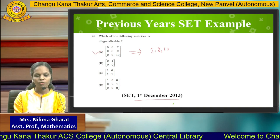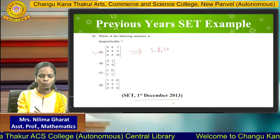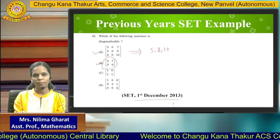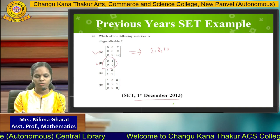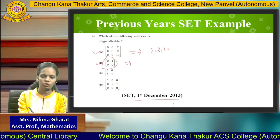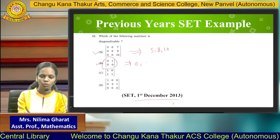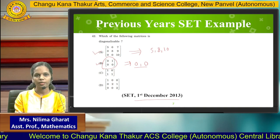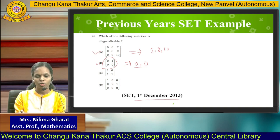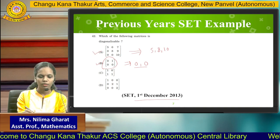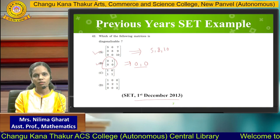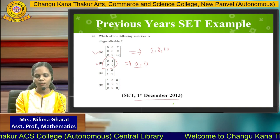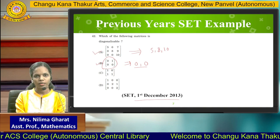Now for option B, this is also an upper triangular matrix. Therefore the eigenvalues are 0 and 0, which are repeated. Since the eigenvalues are not all distinct, the given matrix is not Diagonalizable.